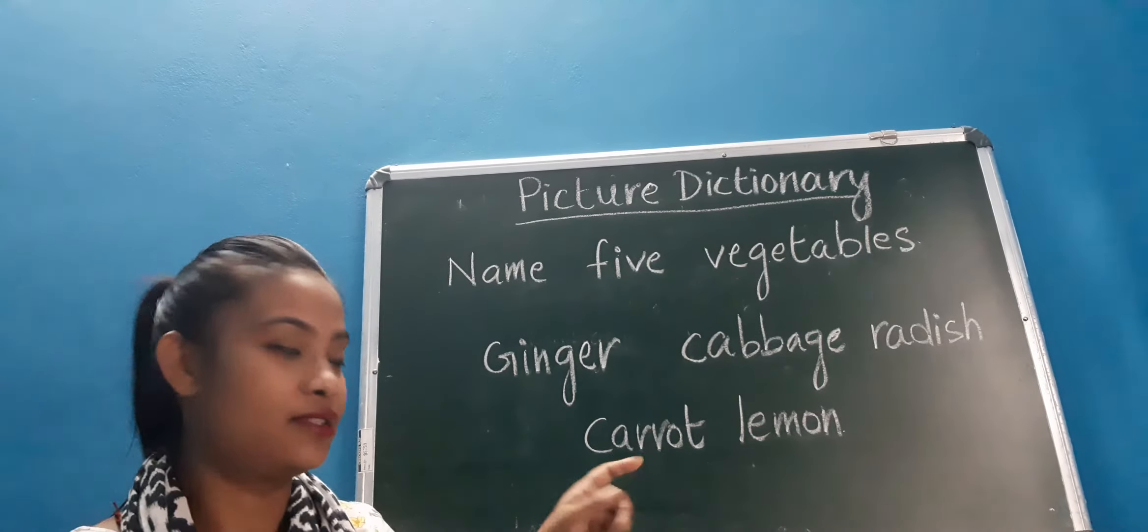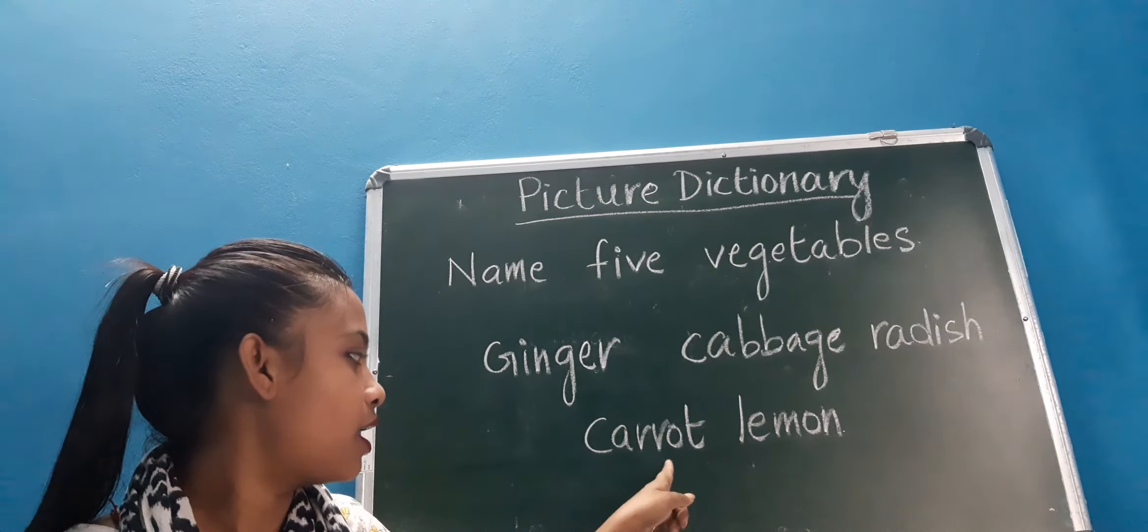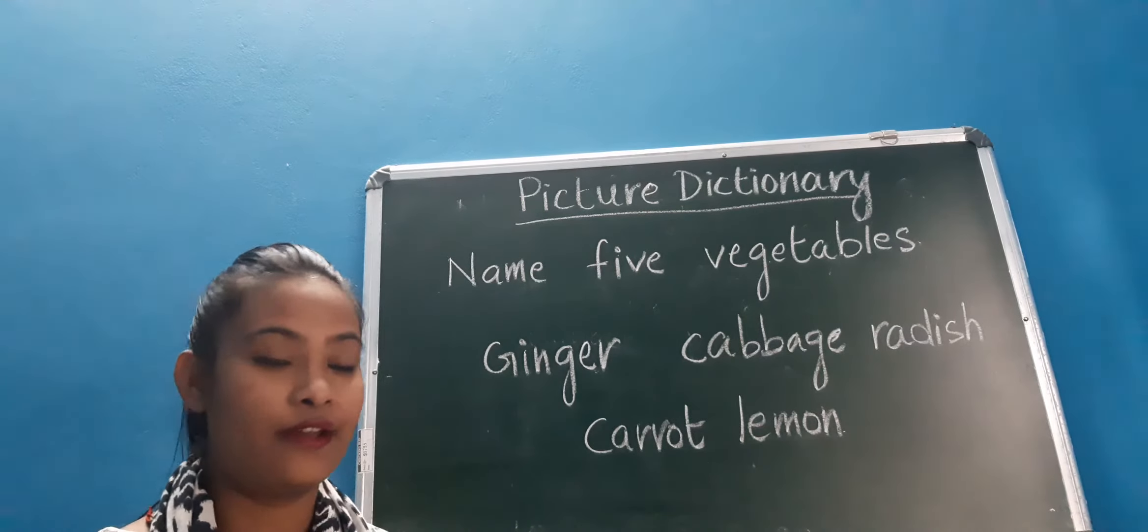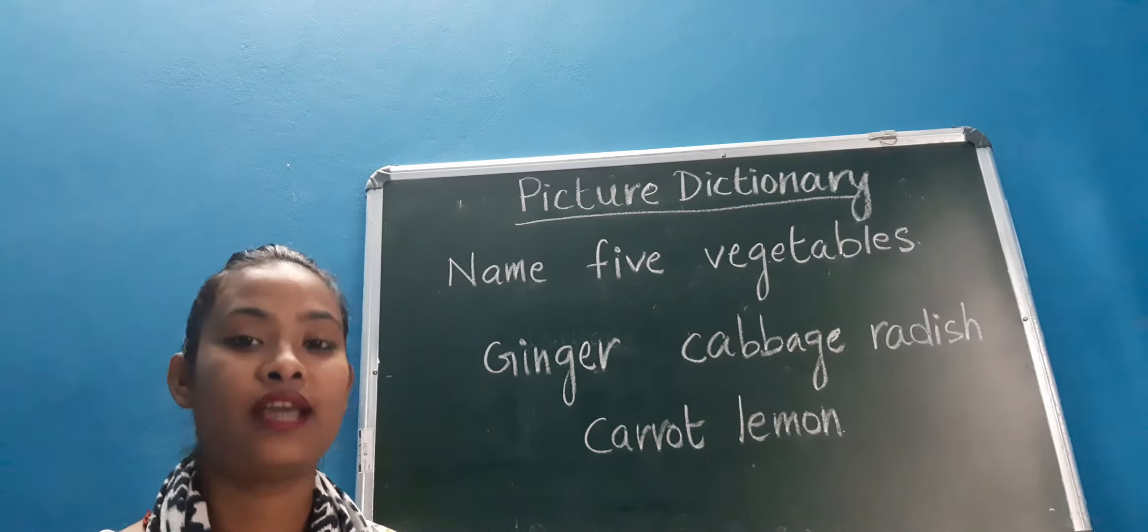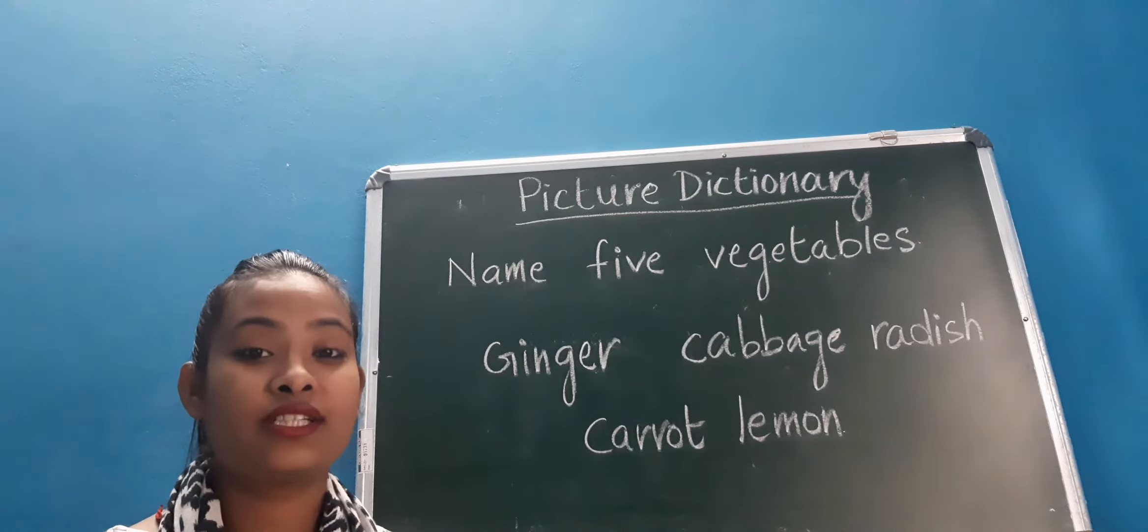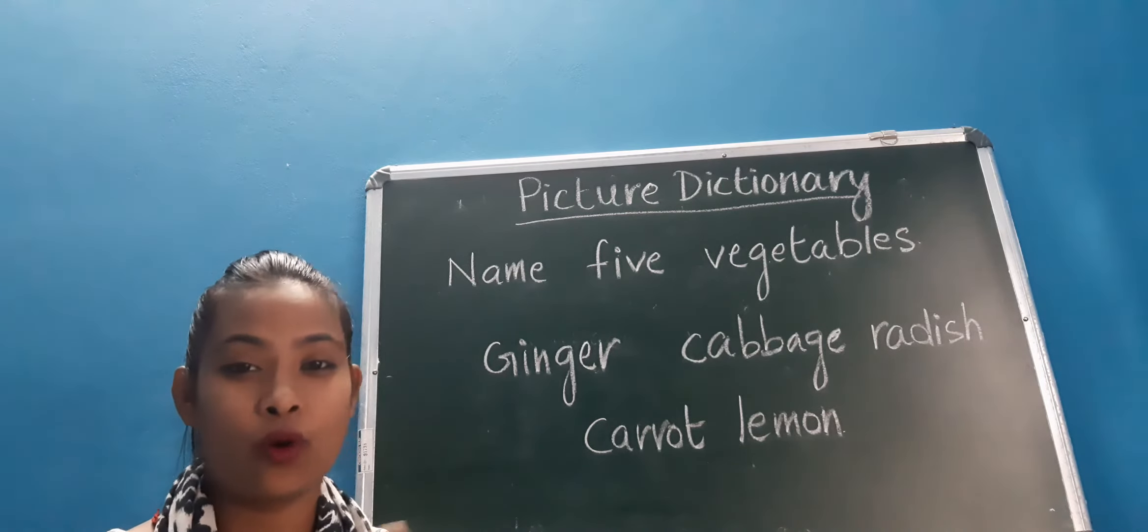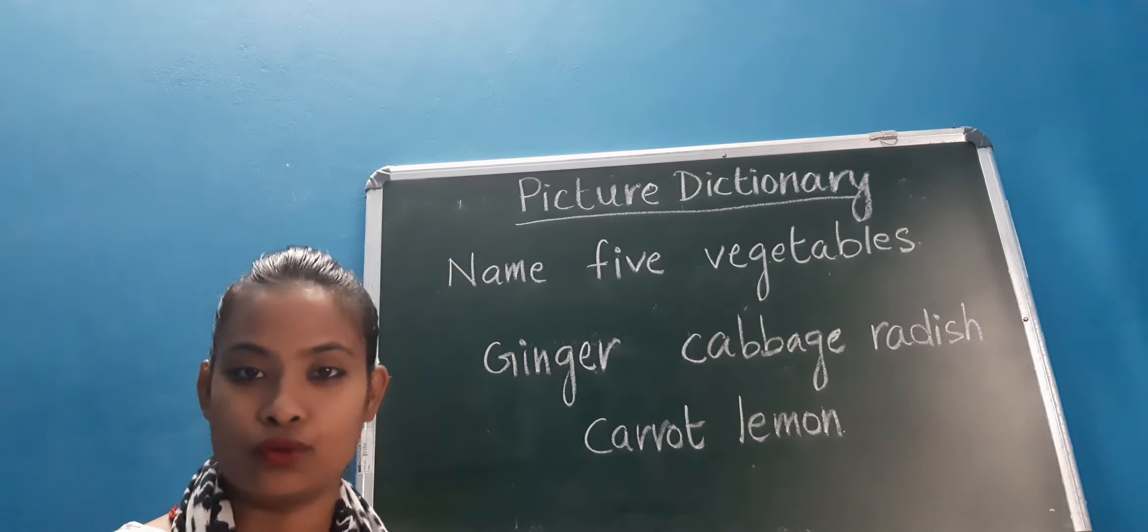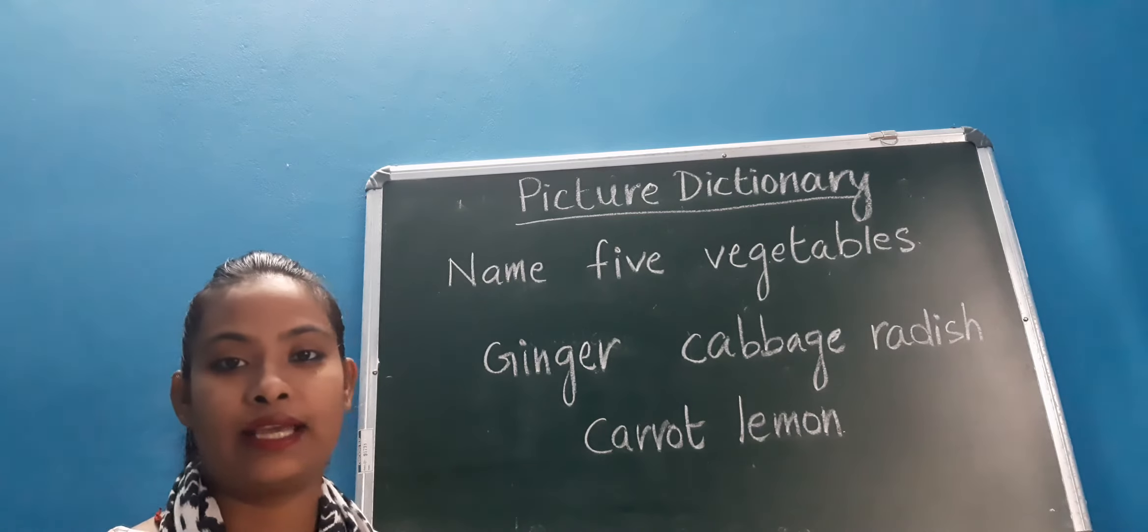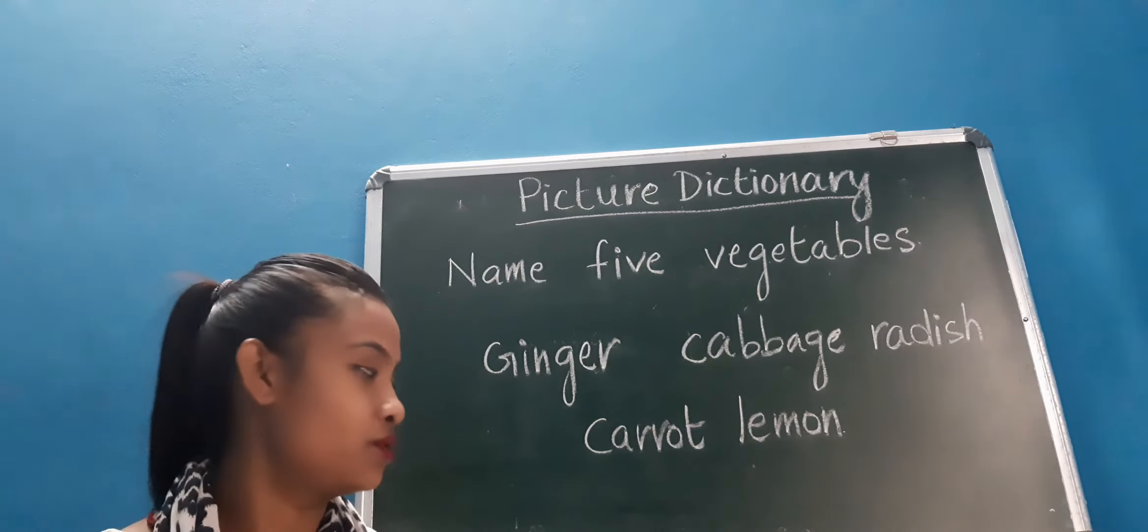Next is carrot. C A R R O T, carrot. Carrot is red in color, that kind of orange type of color. We can eat it raw, just like fruits, or like a salad as well.